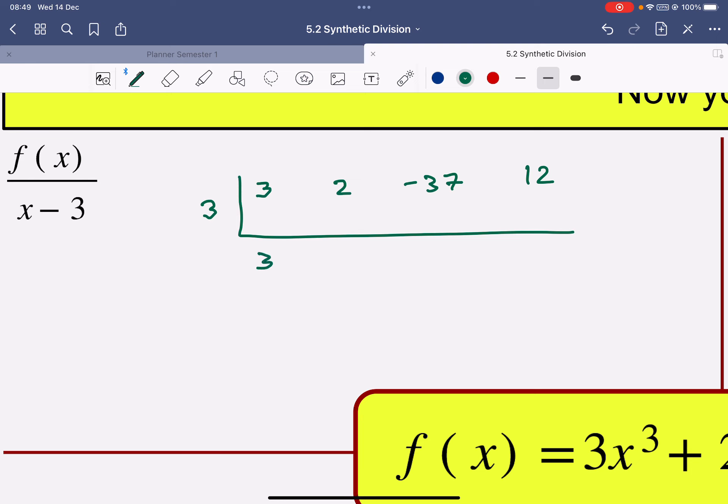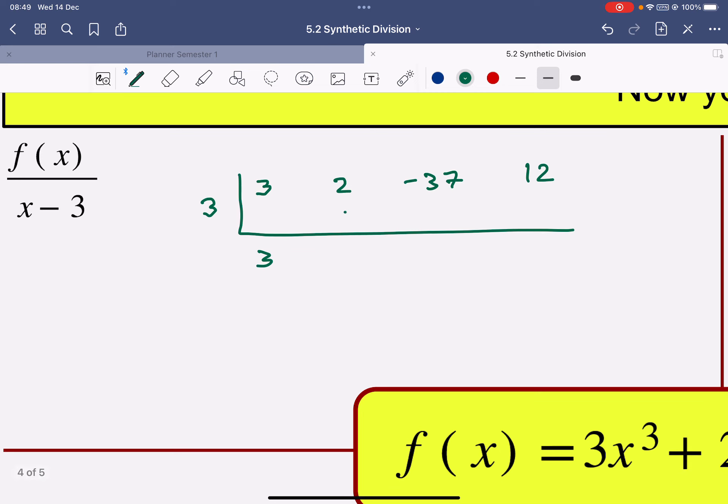Drop the first coefficient, 3. And then we do 3 times 3, which is 9. And we drop down that next coefficient, which is 11. 3 times 11 is 33. And we add those together to give negative 4.